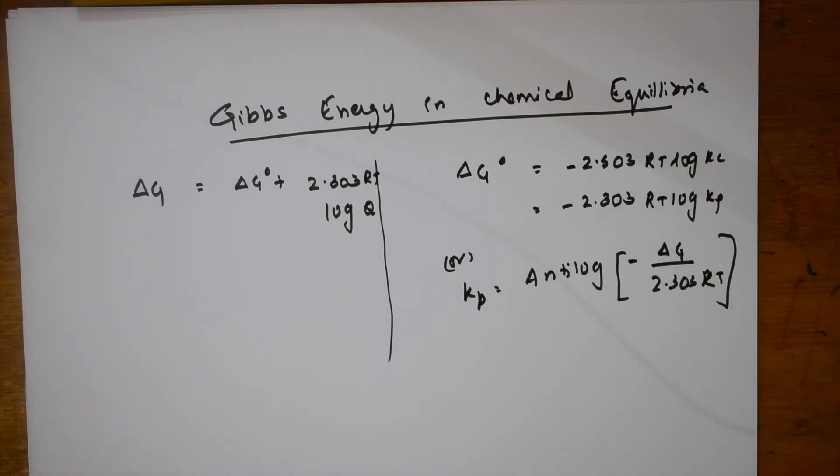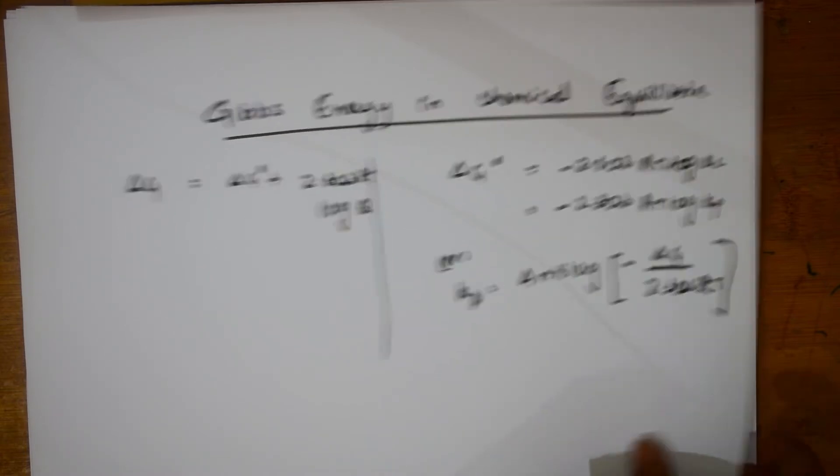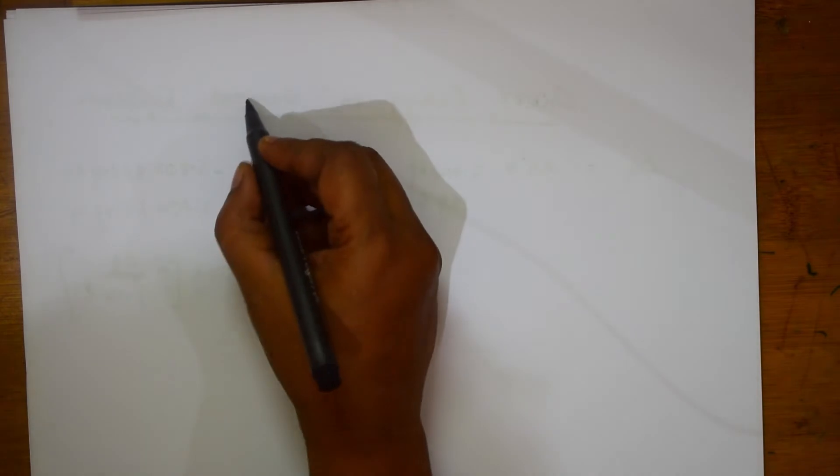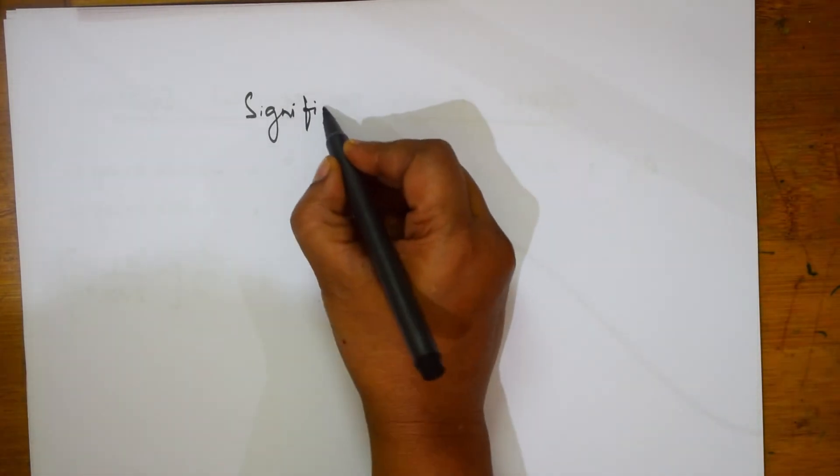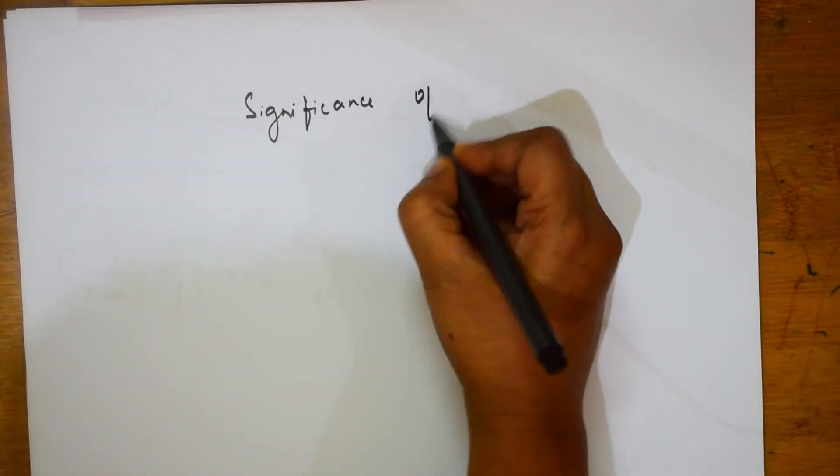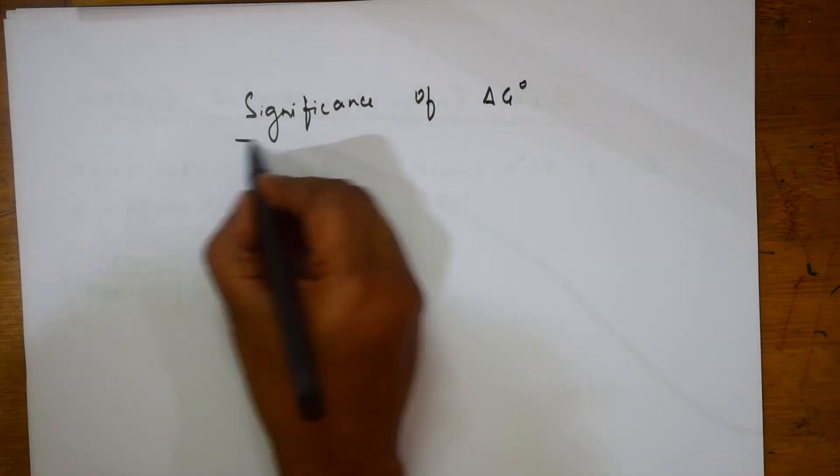For Gibbs free energy, these two formulas you will be using in different numericals. Now, next important thing, a very important concept of Gibbs free energy, that is significance of Delta G naught. This is where they will ask you whether the reaction is feasible or not. You have to remember this.